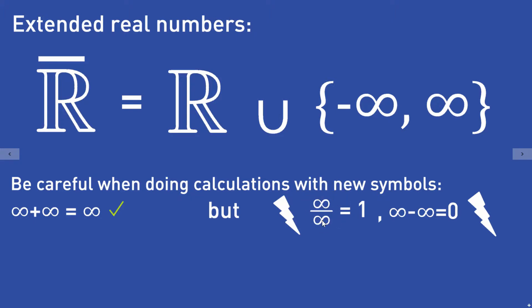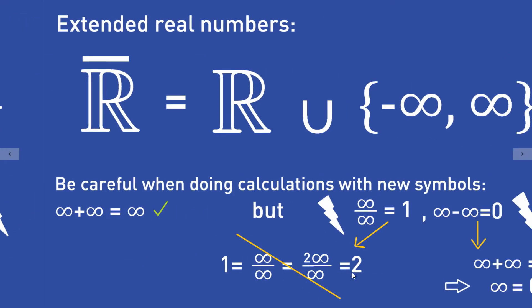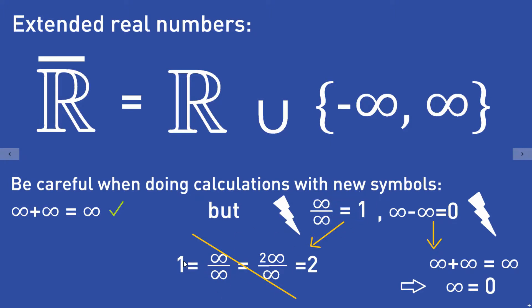But other calculation rules don't work out. For example, infinity divided by infinity is not 1, and infinity minus infinity is not 0. Why? Because this would lead to wrong results. If infinity divided by infinity were equal to 1, we could write: 1 = ∞/∞ = (2·∞)/∞ = 2. And now we have 1 is equal to 2, which is nothing good at all. So this is not a very good idea, because it would lead to 1 equals 2.